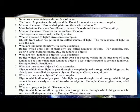Give examples. Objects which allow only a part of the light to pass through it and through which things cannot be seen clearly are called translucent objects. Example: ground glass, oiled paper, etc.